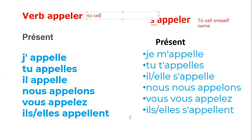So let's see the conjugation of 'appeler' first, in present tense. 'J'appelle' — the conjugation is the same as an -er verb, so the ending is -e, making it 'j'appelle'. The second one is 'tu appelles'. And in case of he calls: 'il appelle'; she calls: 'elle appelle'.